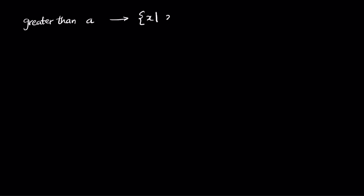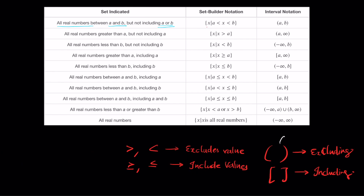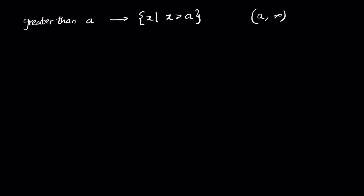Let's start with all numbers greater than a. In set notation, it's written as x such that x greater than a. In interval notation, we write it as open interval a comma infinity. This is called an open interval. Notice it's starting from a and going greater than a, extending until infinity.